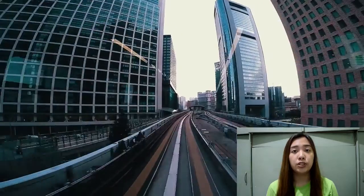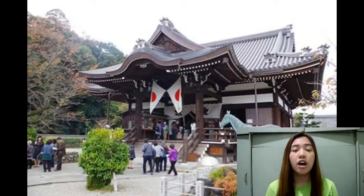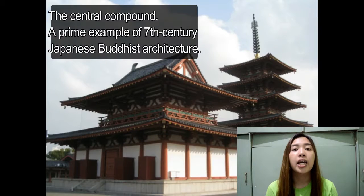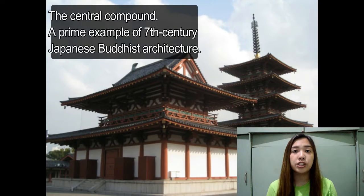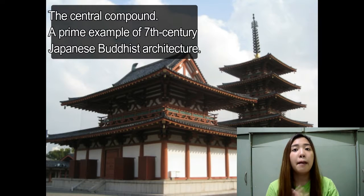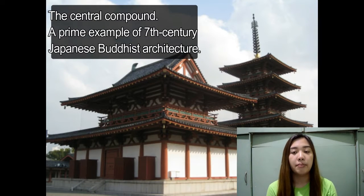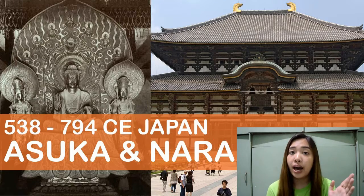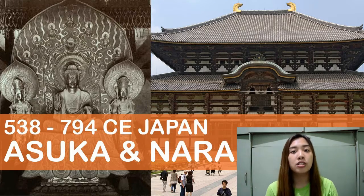Japanese architecture went through several periods of innovation over the history of Japan. The early 7th century was dominated by wooden structures such as shrines and temples built by the nobles. This is known as the Asuka and Nara periods, which were also periods of blossoming art and culture in Japan.